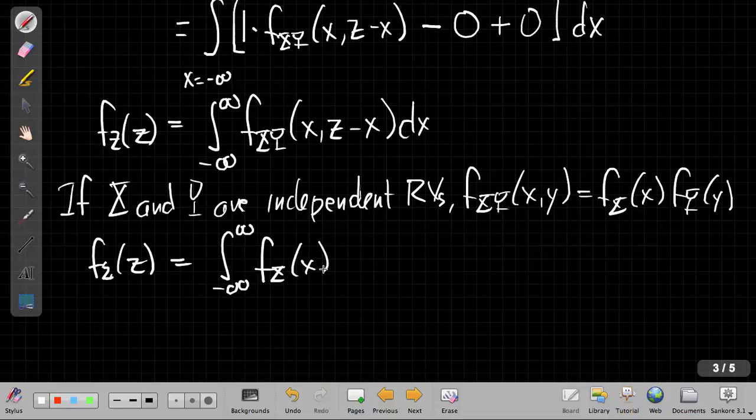That lets me simplify things one step further. The joint PDF is now the integral from minus infinity to plus infinity of f_X(x) times f_Y(z minus x) dx. And that, when we look at it for a second, we recognize as our old friend or nemesis, depending on your experience, convolution.